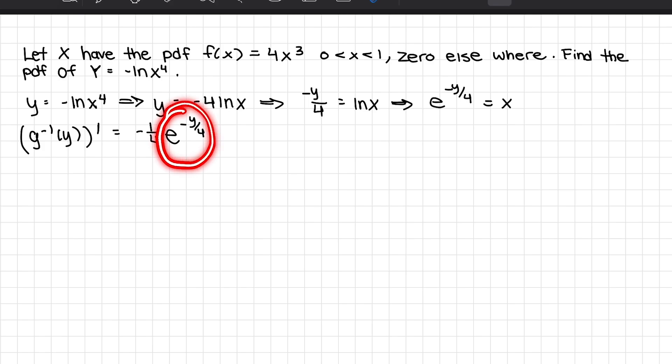The derivative of e to the negative y over 4 is just e to the negative y over 4. And by chain rule, I'm going to multiply this by negative 1 over 4. But I have to remember that I need to find the absolute value of this in order to use it into my Jacobian technique. So the absolute value of this is just going to be 1 over 4 e to the negative y over 4. I have to keep this negative in the exponent.